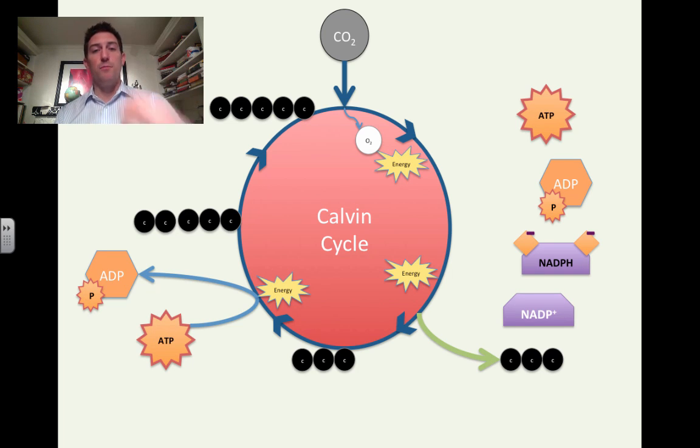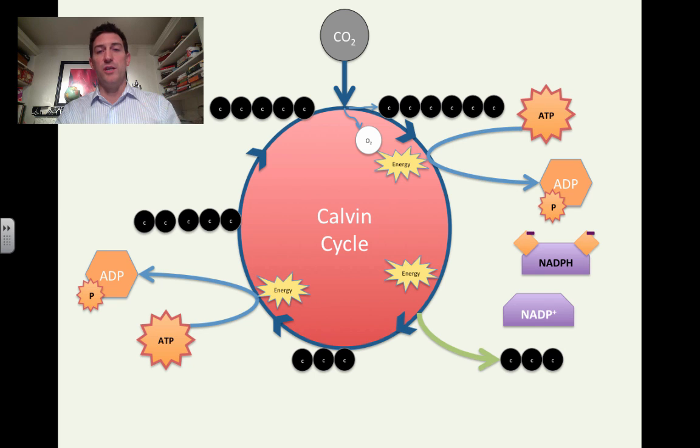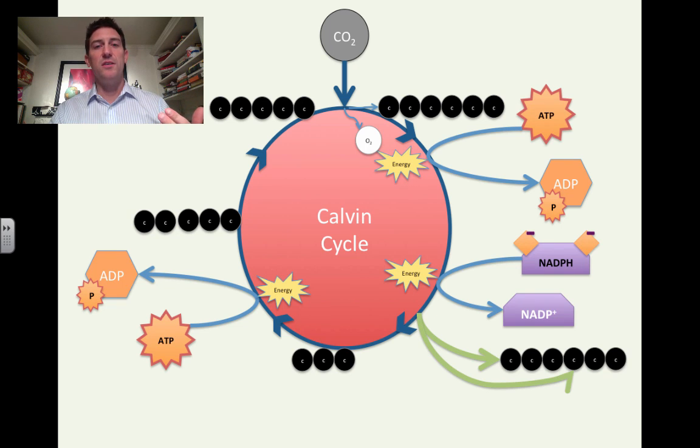This happens again. More CO2 comes in, it gets broken apart, the carbon gets broken off and hooked onto that five carbon chain making a six carbon chain. Then ATP comes in and slams into that and releases its energy. NADPH comes in, the electrons break off, it releases its energy, and this thing breaks apart again. All of a sudden down here at the end of the Calvin cycle, we've gone through the Calvin cycle one time, two times.